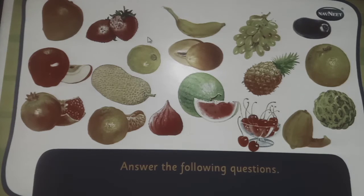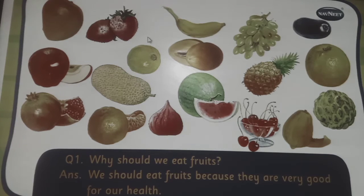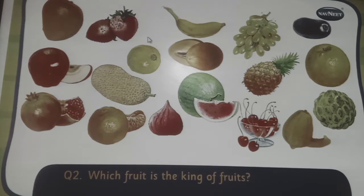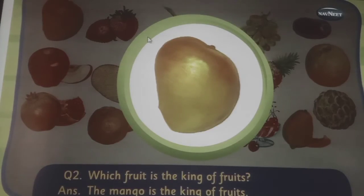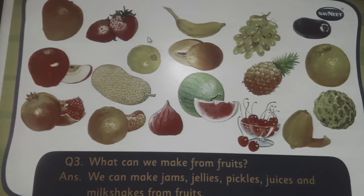Answer the following questions. Why should we eat fruits? We should eat fruits because they are very good for our health. Which fruit is the king of fruits? The mango is the king of fruits. What can we make from fruits? We can make jams, jellies, pickles, juices and milkshakes from fruits.